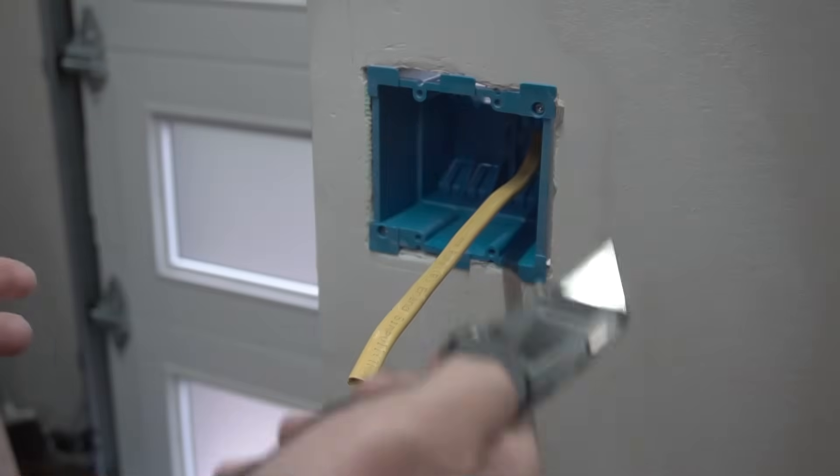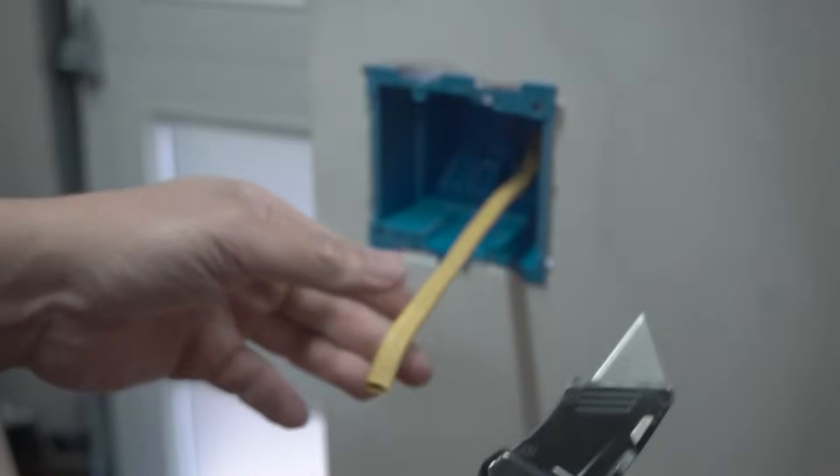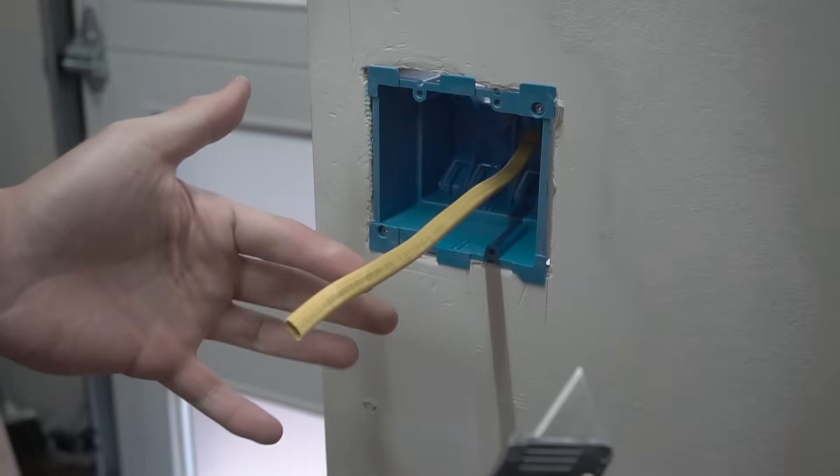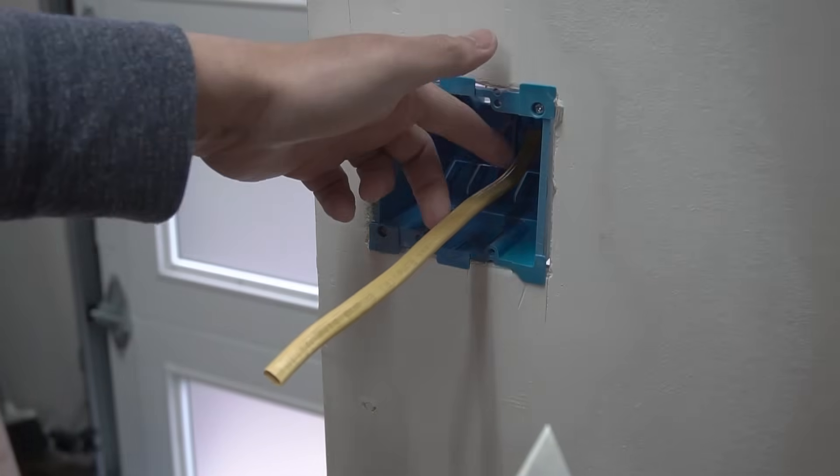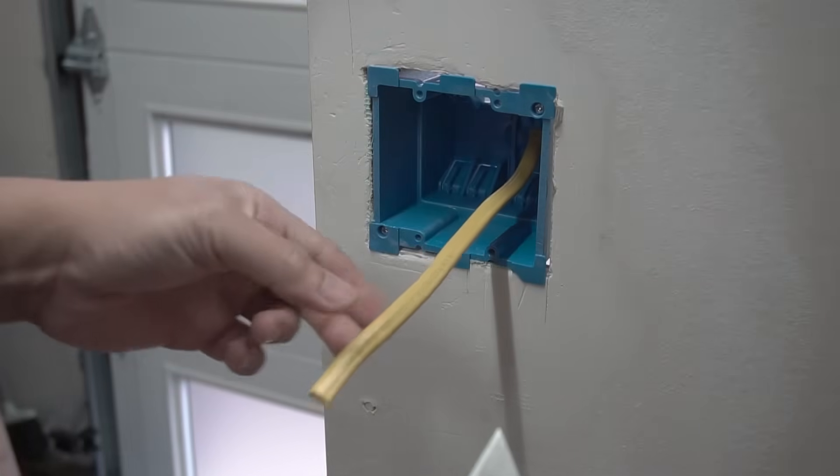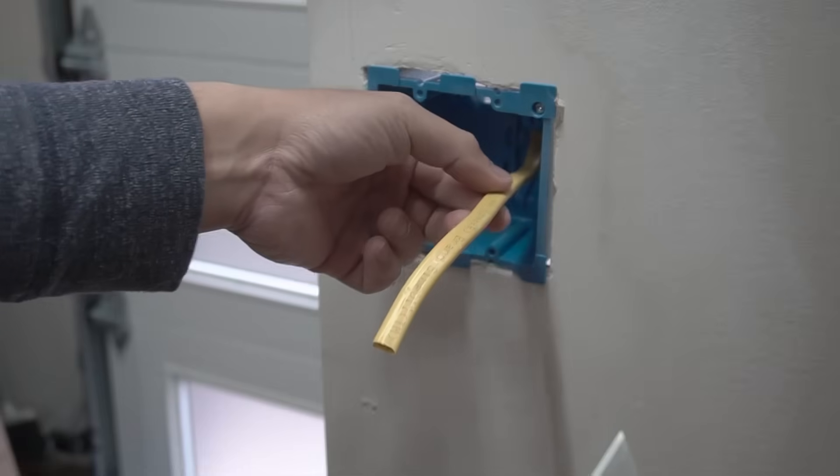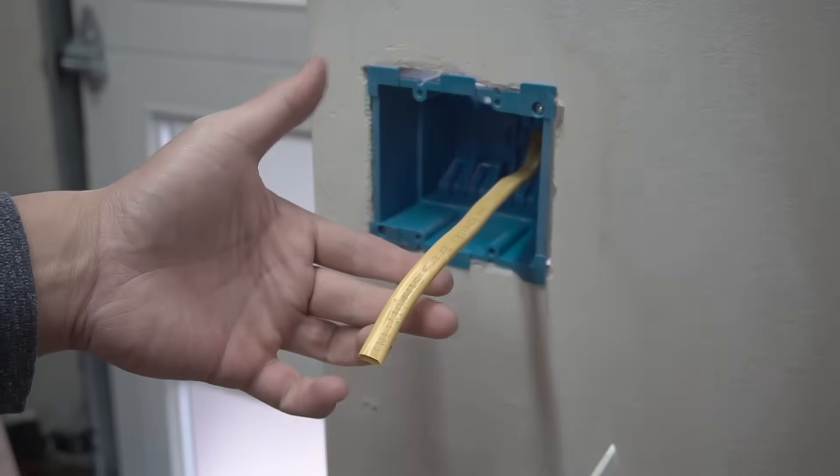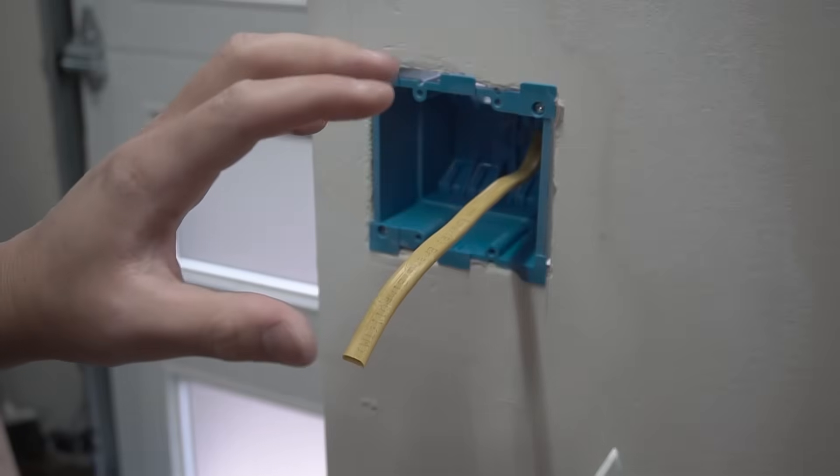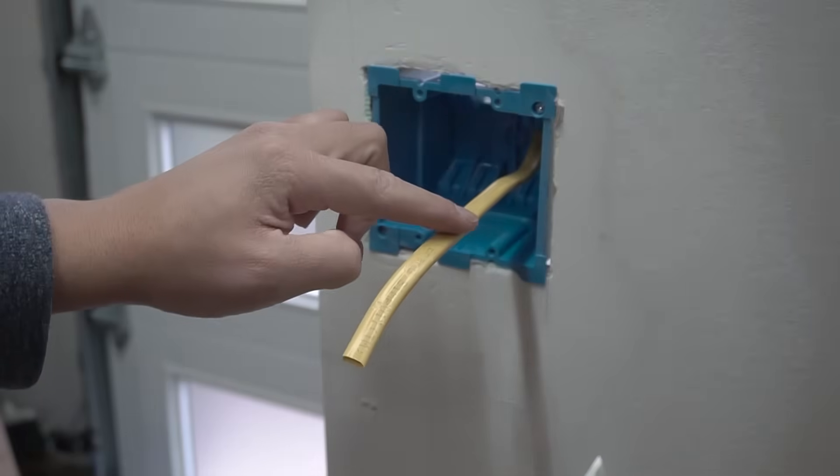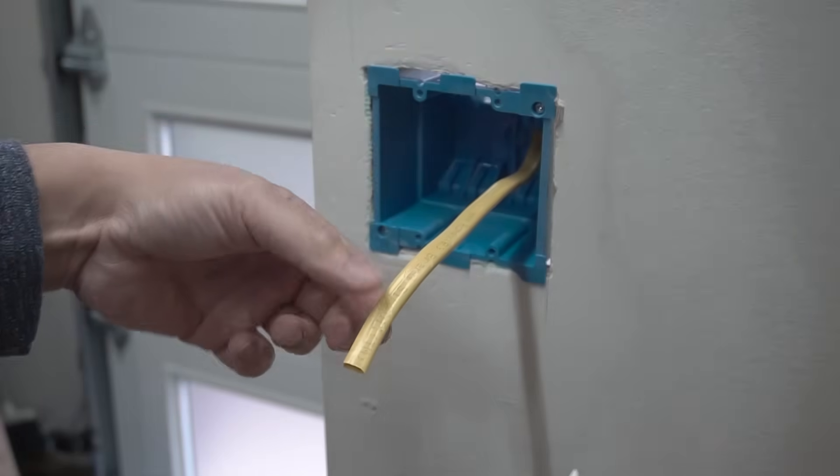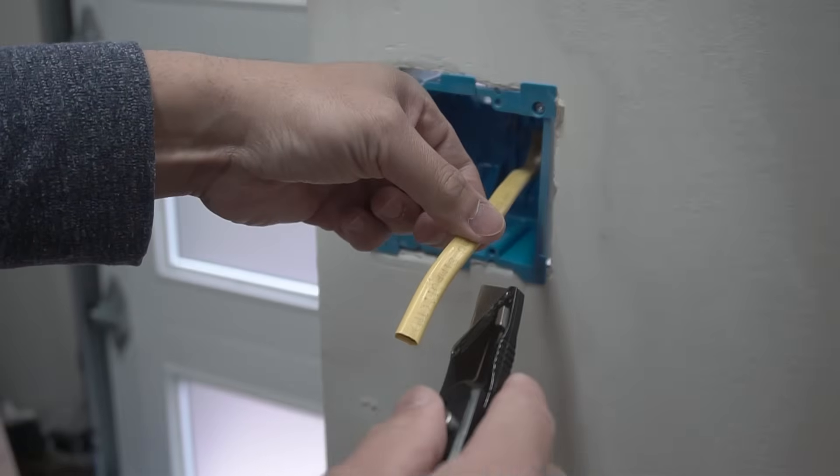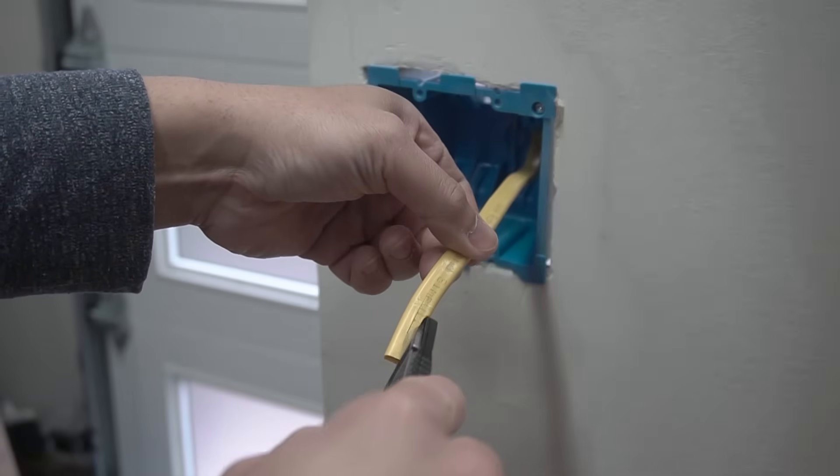Let's get to method number two and you're still going to be using your utility knife. Now this one is fairly easy and it doesn't require cutting and slicing all the way through. What you're going to do since this sheathing is made out of plastic and it's very easy to tear and run right when you cut it. Some people will actually just slice the tip of this sheathing carefully.